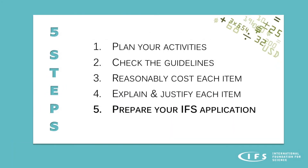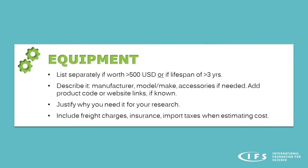Now that you know what to do, it's time to prepare your IFS budget. All the information provided here is available in detail in the application guidelines. For equipment, list items separately if they are worth more than $500 US dollars or have a lifespan of more than 3 years. Describe each item in detail, including the manufacturer, model, make, and any accessories needed. It can be helpful to add the product code or catalog number, or include a website link. Justify why you need this specific item, what part of your research plan it relates to, and make sure you include freight charges, insurance, and import taxes when estimating the cost.